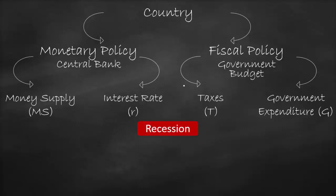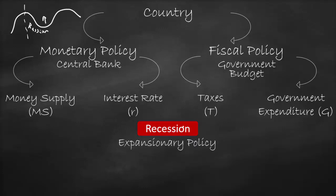Let's assume we have a recession — it means we have a contraction. If we have a recession, the economy could head into depression with a longer contraction. Our appropriate policy is to move against the economy. So if the economy is moving down into a recession, we would like to pull it up. Therefore, our policy will be the opposite of recession or contraction, which will be an expansionary monetary policy or expansionary fiscal policy.